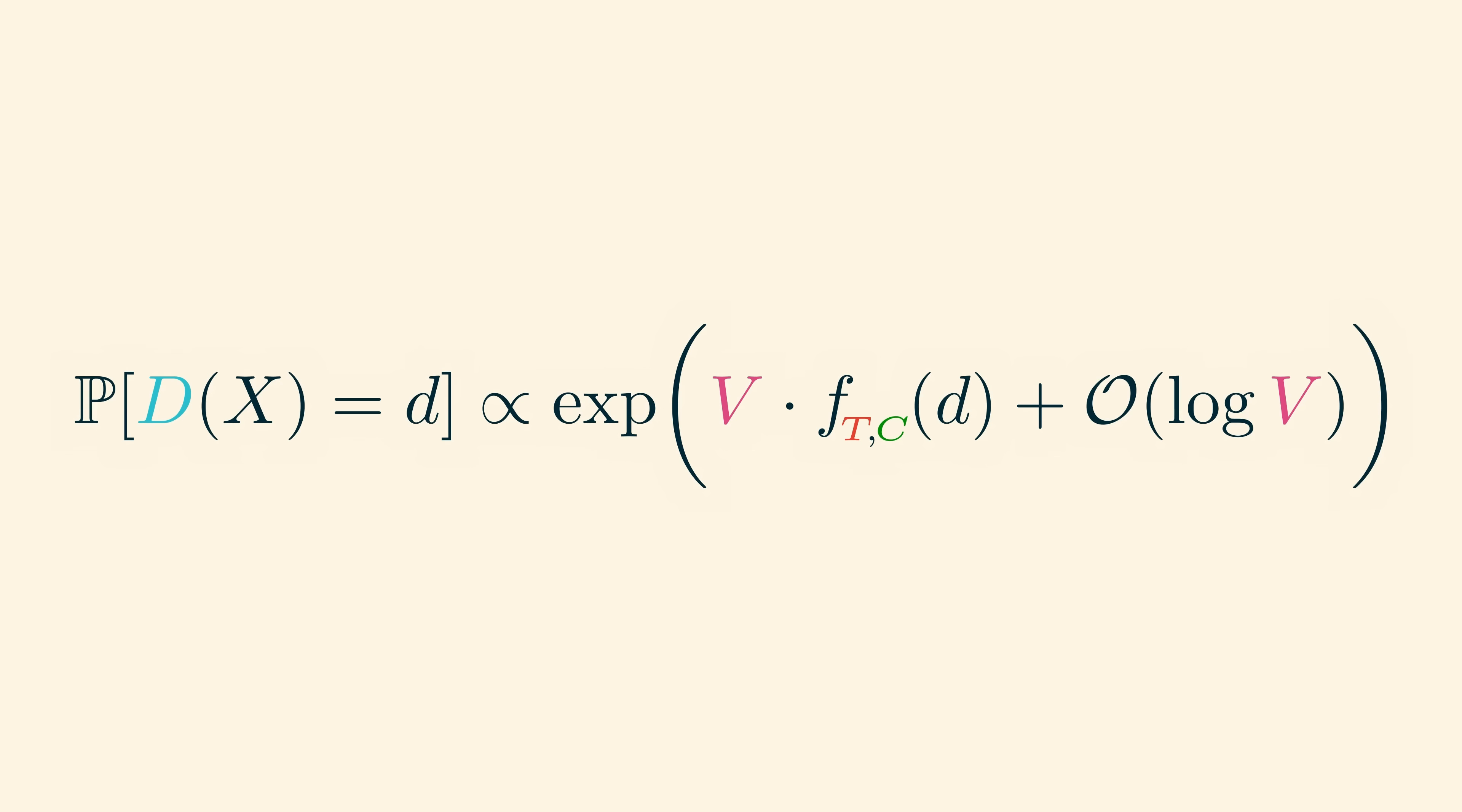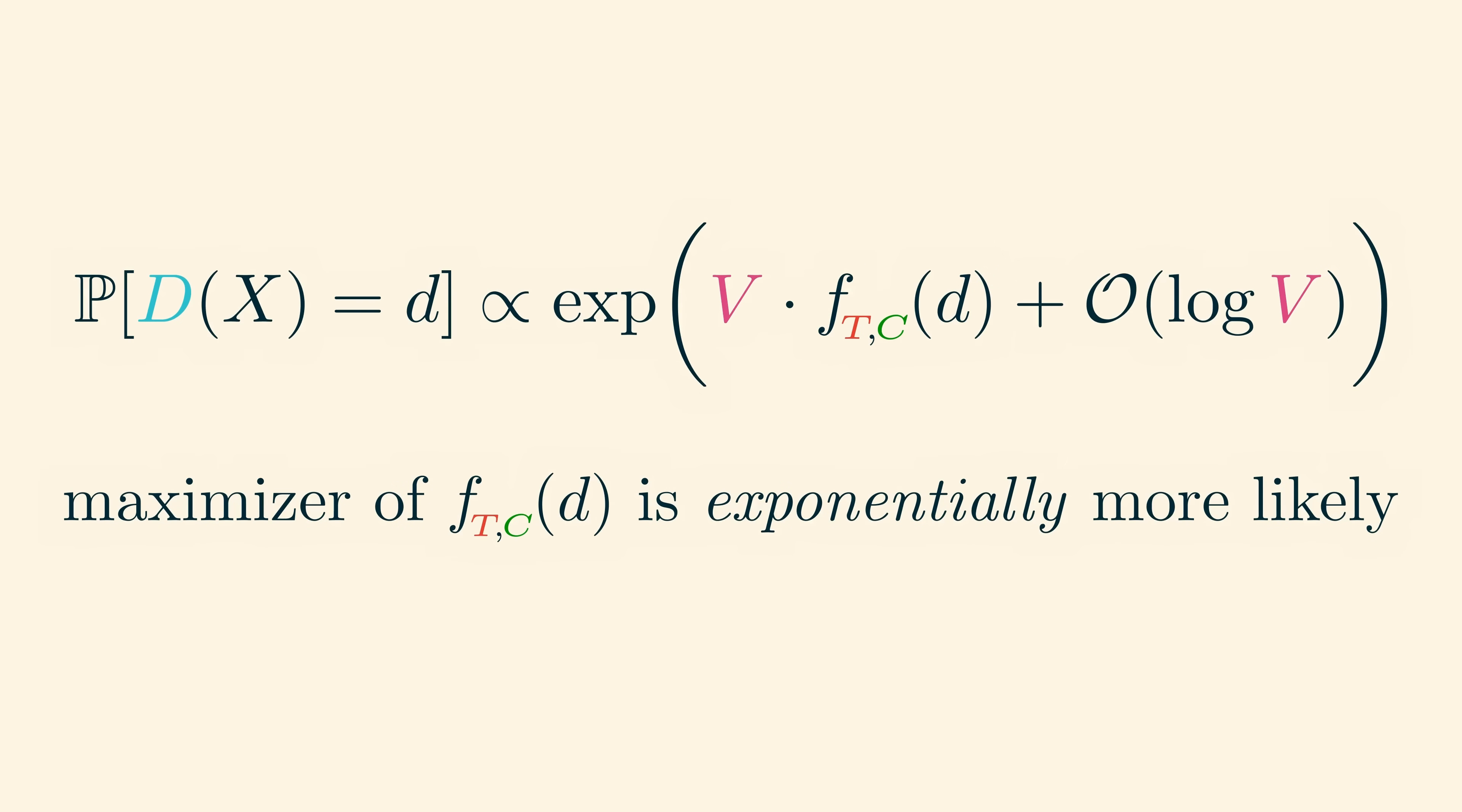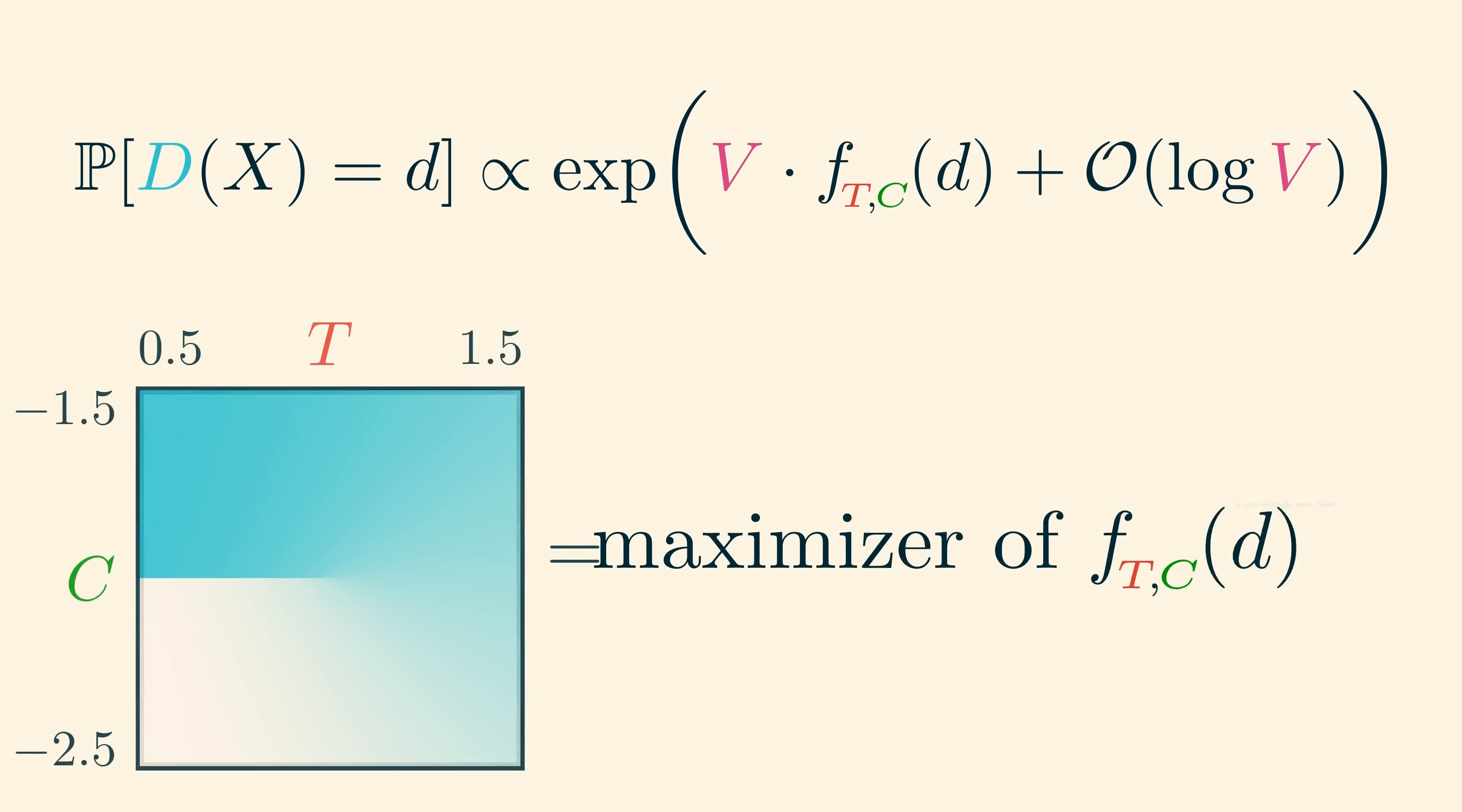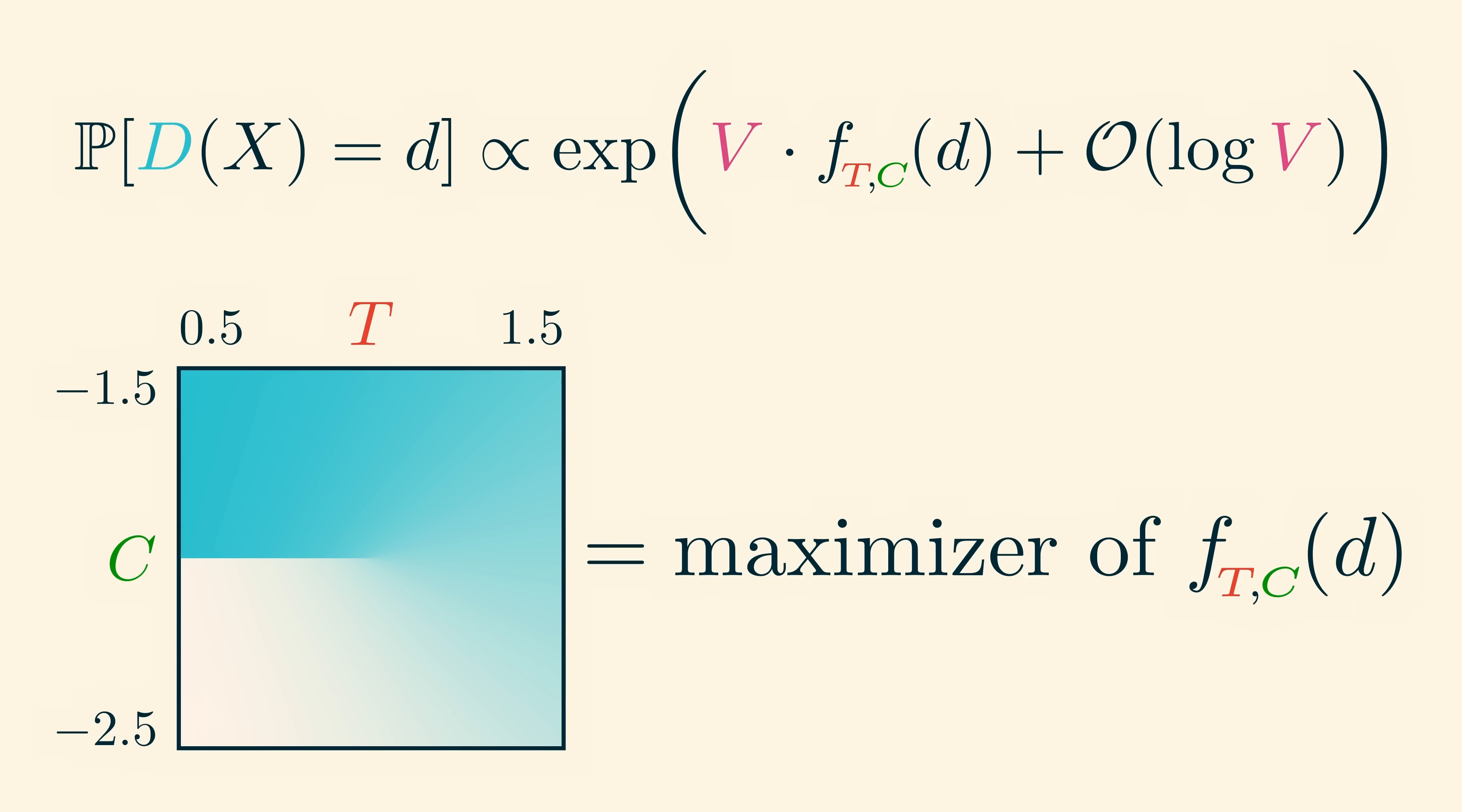And the density d which maximizes the function f tc is exponentially more likely than any other density. This means that as soon as v is reasonably large, there's basically no chance of seeing a state with a density that's much different from the maximizing density. In other words, the density in our phase diagram, as a function of the temperature t and the chemical potential c, is the density d which maximizes f tc.